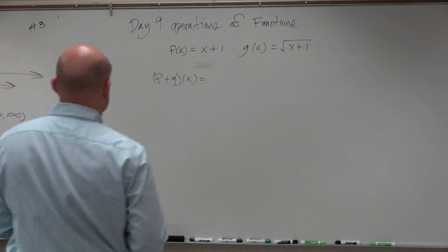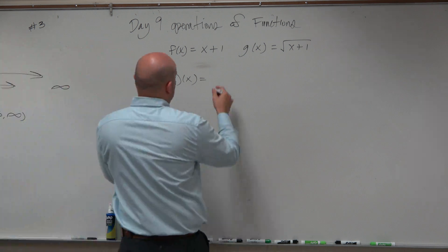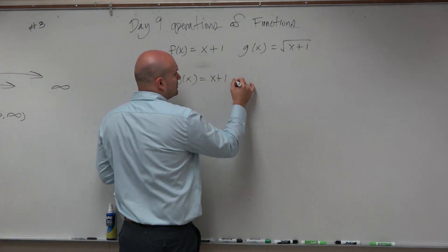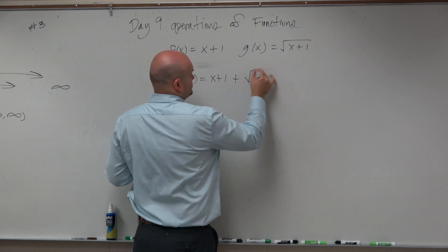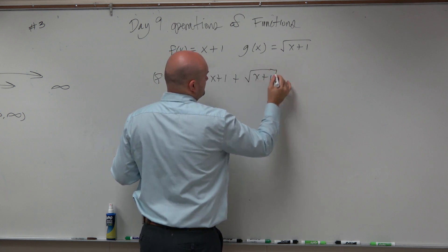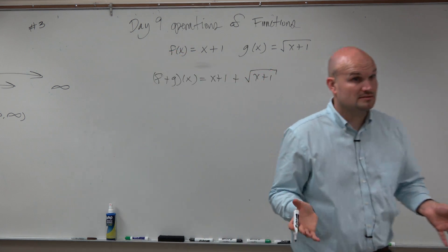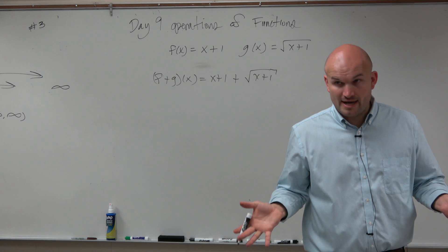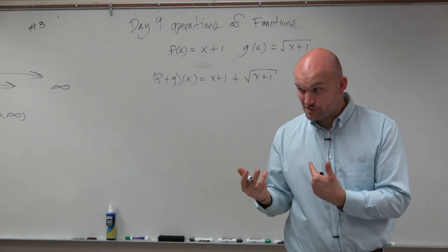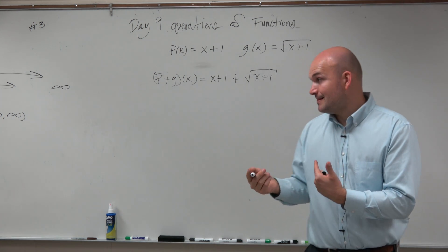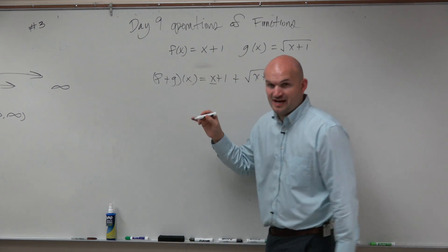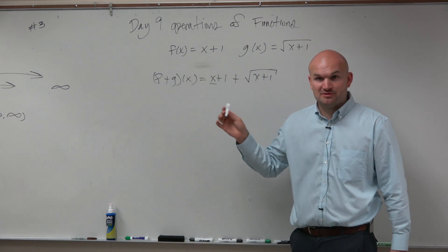So if we're going to do f plus g of x, basically we're adding x plus 1 plus the square root of x plus 1. Remember my conversation about like terms — to add x with anything, you've got to have some more linear variables.